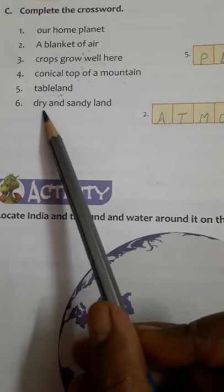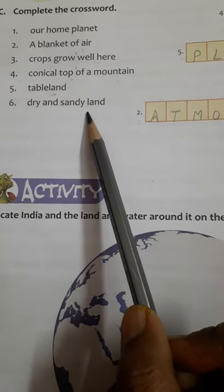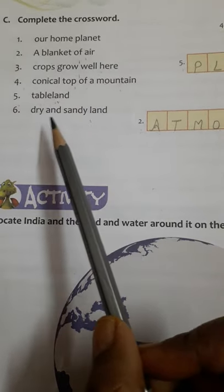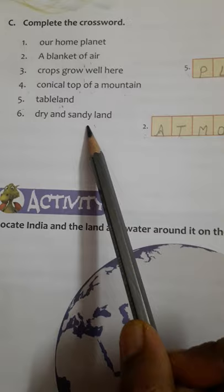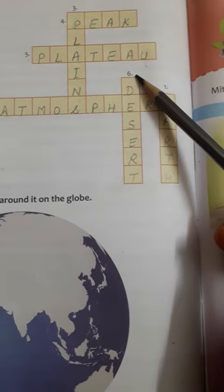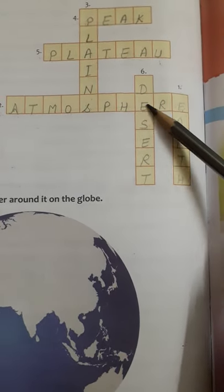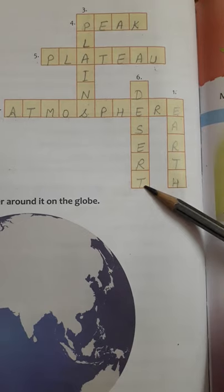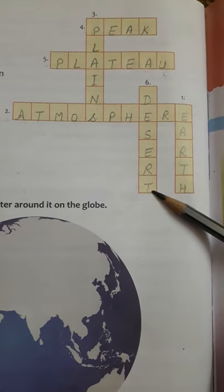Number 6, dry and sandy land. Everyone should know this. Dry and sandy land is Desert. Number 6, where is number 6? Here, you will write here. Desert: D-E-S-E-R-T.